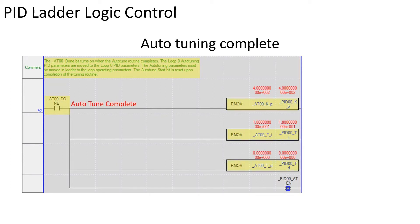In rung 92, when the auto-tuning routine completes, the auto-tune variables are moved to the PID operational variables for loop 0 in a real number format. The PID auto-tune enable bit is also reset.